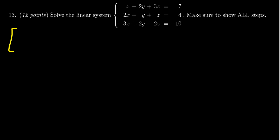If we write this system as an augmented matrix, we're going to get 1, -2, 3, draw your line, 7. And then we're going to get 2, 1, 1 and 4.